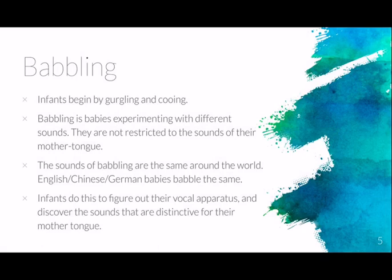Babies who grow up in English-speaking families will be able to make all of the sounds in the IPA chart from the time when they begin babbling. All babies, no matter which country they grow up in or what language they're surrounded by, babble in the exact same way. They do this to figure out their vocal apparatus — the different parts of their mouth and speech organs which create sound.